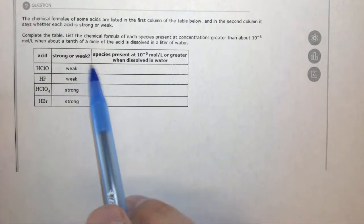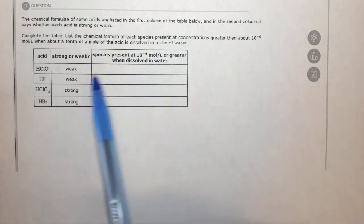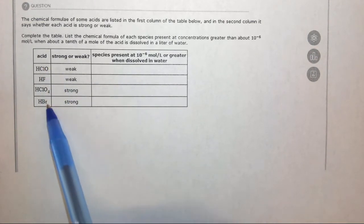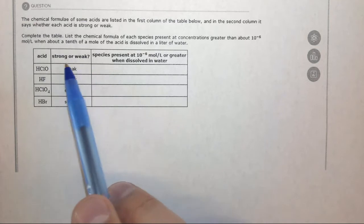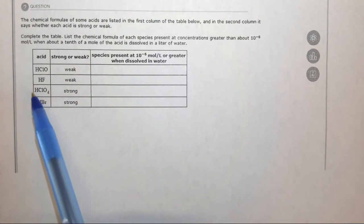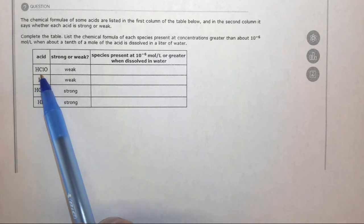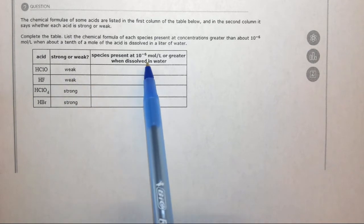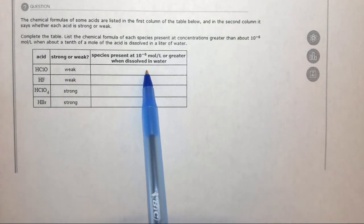In this question we're asked to identify the formula of the species that exist in water when the following compounds are dissolved in water, and we're given whether they are strong or weak acids, or you may know this by memory. So here we have hypochlorous acid, and it's a weak acid.